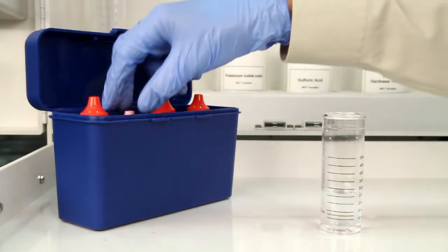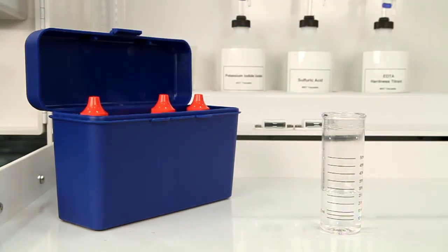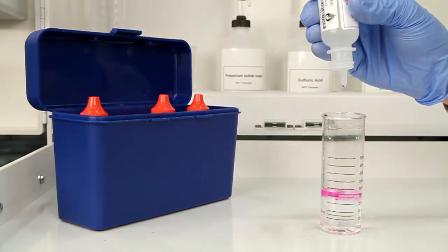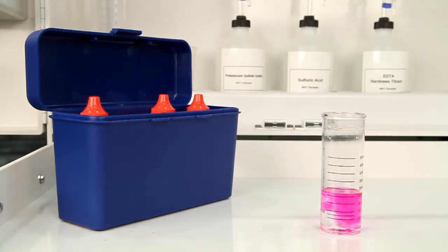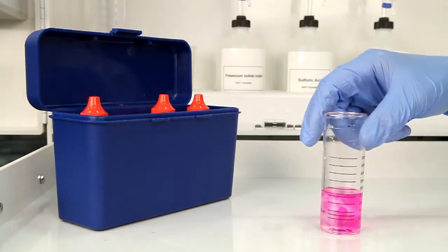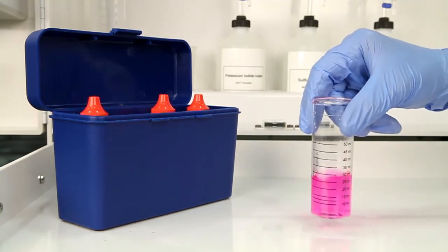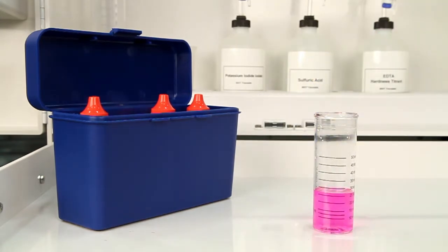The next step is to add 2 drops of phenolphthalein indicator. The bottle contains a dropper tip, so hold the bottle vertically to get a consistent drop size. After the addition, swirl the vial to properly mix the sample. The sample will turn pink if alkalinity is present.